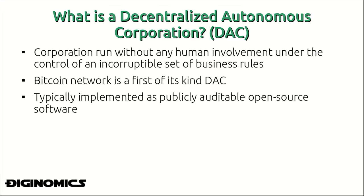Bitcoin is an incorruptible corporation in that anyone can see exactly what the protocol is designed to do by analyzing its source code, and it's truly a first of its kind decentralized autonomous corporation. It's a corporation in the sense that it does have employees — except instead of human employees, it has machine employees: the miners of the Bitcoin network. And it even has shares, in a sense — units of Bitcoin themselves can be seen as shares.